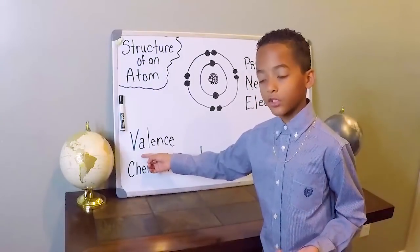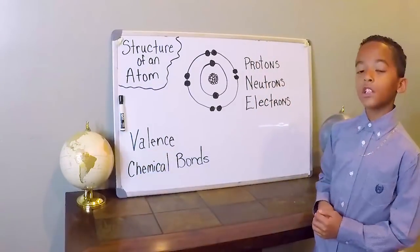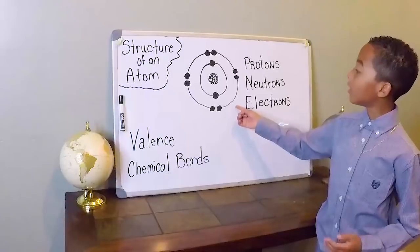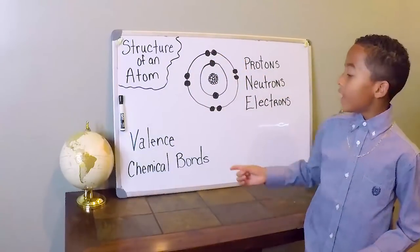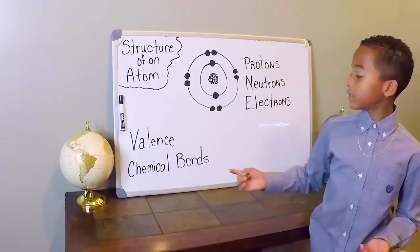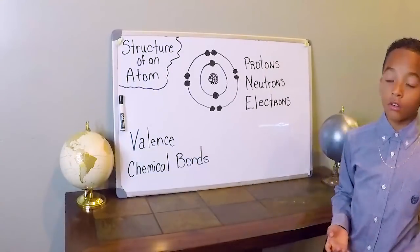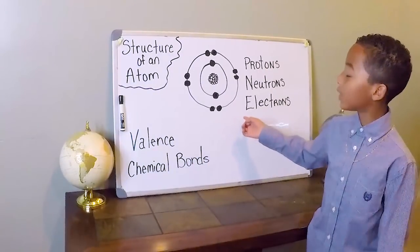Now let's talk about the valence electrons. The valence electrons are located on the outer shell of the nucleus, and valence electrons are also responsible for chemical bonds.